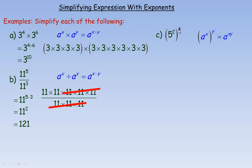For example c, 5 squared raised to the power of 4 — this is often called the power of a power rule. If you have a to the power of x and the whole thing is raised to the power of y, you multiply the exponents to get a single power: a to the power of x times y. So 5 squared to the power of 4 is evaluated as 5 to the power of 2 times 4, which is 5 to the power of 8.